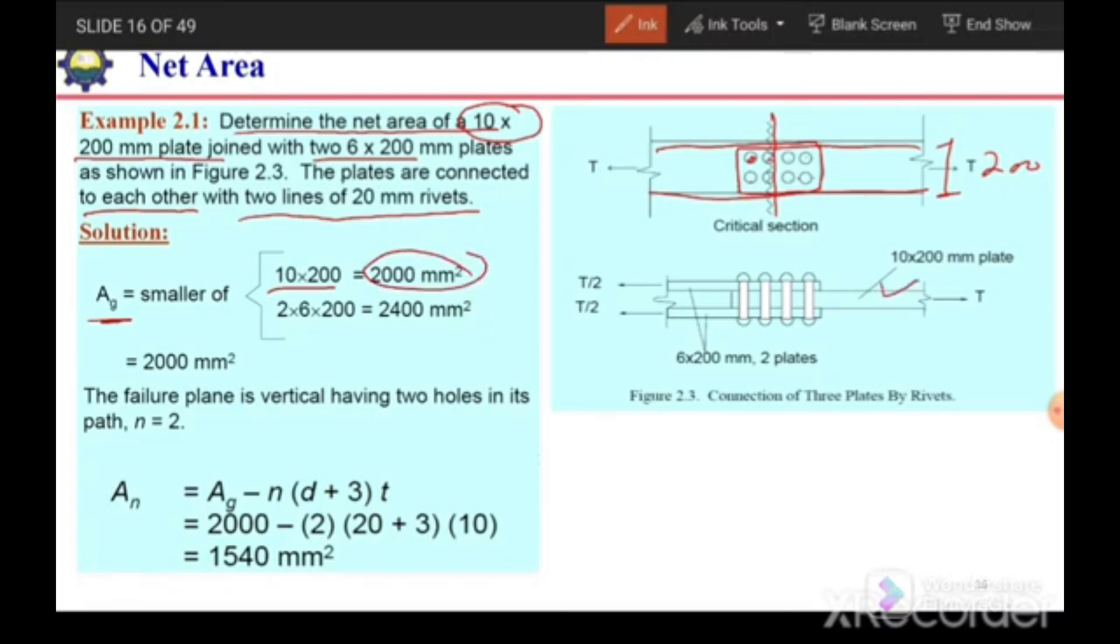So this dimension is 200, so here the gross area of this single plate will be equal to 2000 millimeter square. And on the other side we have two plates, each having 6 millimeter thickness and 200 millimeter width, so the area of these two plates which are acting collectively is 2400 millimeter square. We need to consider the lesser of these two areas. So here this 2000 millimeter square is the smaller value, so this one will be considered.